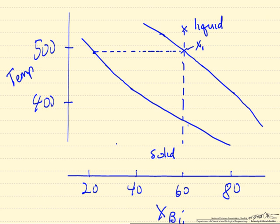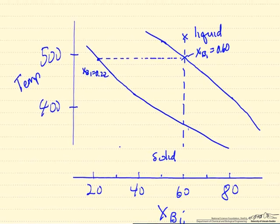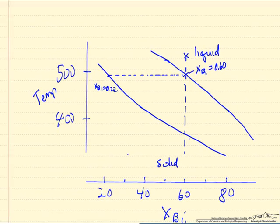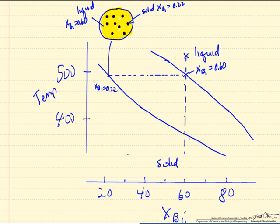The liquid composition is a mole fraction of bismuth of 0.6. The solid composition is approximately 0.22. So solid and liquid have significantly different compositions. This would be the equilibrium, so the first solid that forms would have this composition. What we would end up with is a mixture of liquid and small particles of the solid that are forming.